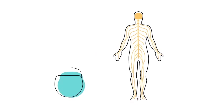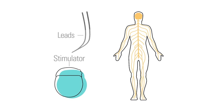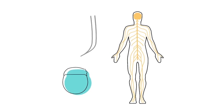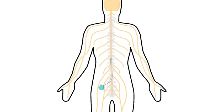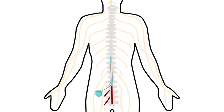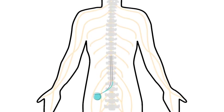SCS is designed to interrupt those messages using a small electronic device called a stimulator and thin, flexible leads. Similar to a pacemaker, the stimulator is implanted under the skin where it generates mild pulses. Those pulses travel through the leads to nerves along the spinal cord and interrupt the pain signals en route to the brain.